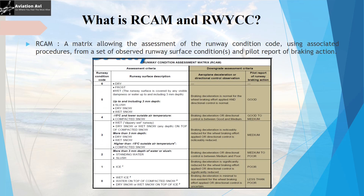Now let us understand what is RCAM, or the runway condition assessment matrix. It is a matrix allowing the assessment of runway condition code using associated procedures from a set of observed runway surface conditions and the pilot's report of braking action. Basically, the assessment criteria for runway condition code is combined with the criteria for pilot's report of braking action. For example, if the runway condition code is 5 — meaning the runway is wet with water depth not more than 3 mm — ideally the pilot's report of braking action should be 'good,' meaning braking deceleration is normal for the wheel braking effort applied and directional control is normal.